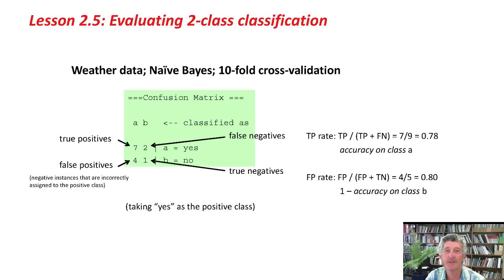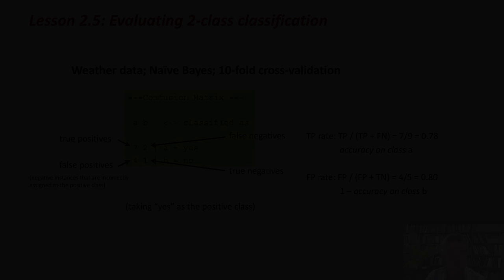The main point of this lesson is that there's a trade-off between these things. You can trade off the accuracy on class a against the accuracy on class b. You can get better accuracy on class a at the expense of accuracy on class b, and vice versa. To show you what I mean, let's go back to Weka.